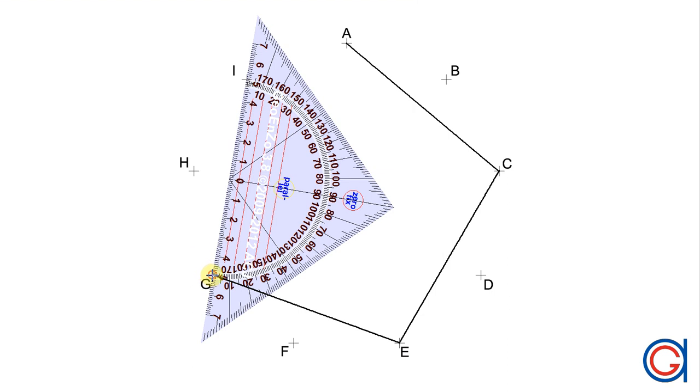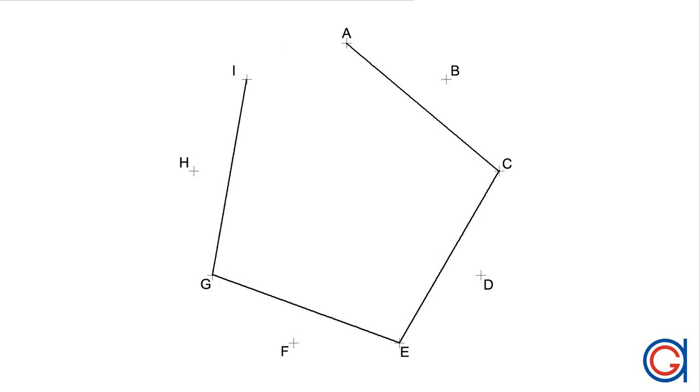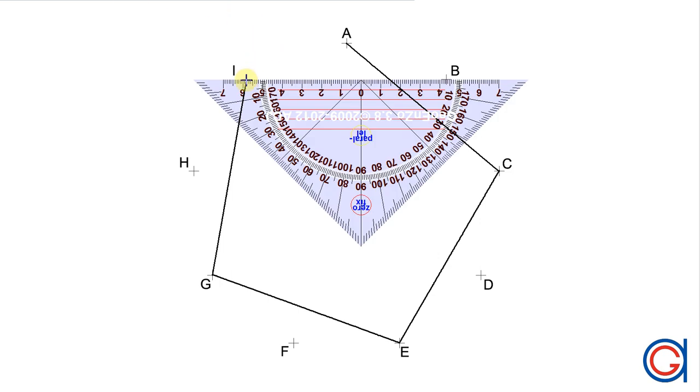Now we join vertex G to I, skipping vertex H. Vertex I to vertex B, skipping vertex A.